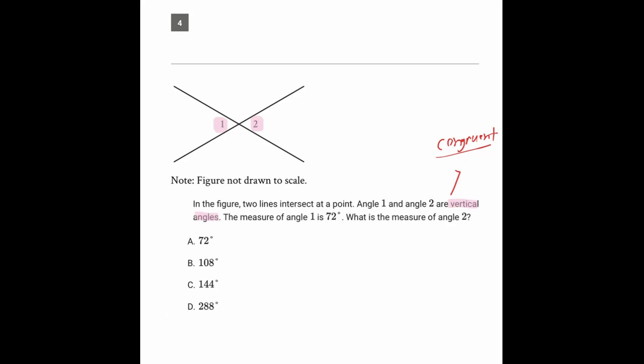So the measure of angle 1 is equal to the measure of angle 2. If angle 1 measures 72 degrees, then so will angle 2, and that's answer choice A.